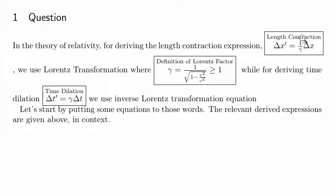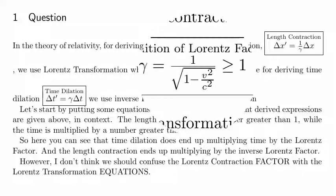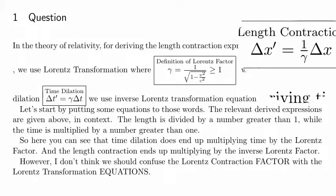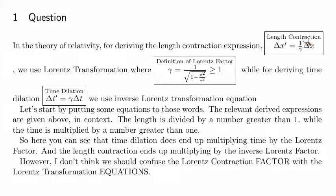So the length contraction is divided by a number greater than 1, whereas the time dilation is multiplied by a number greater than 1. You can see that time dilation ends up multiplying by the Lorentz factor and length contraction ends up multiplying by the inverse Lorentz factor, or reciprocal.